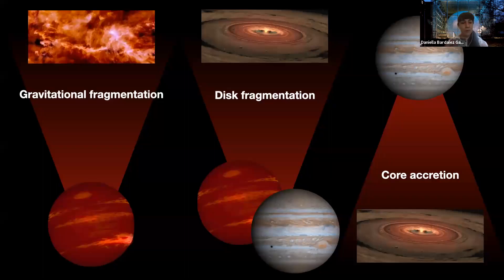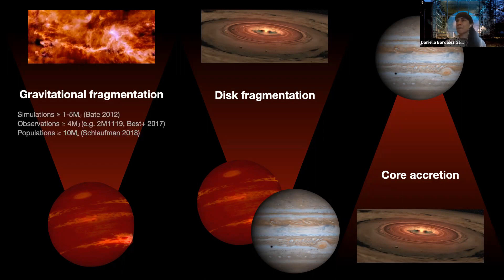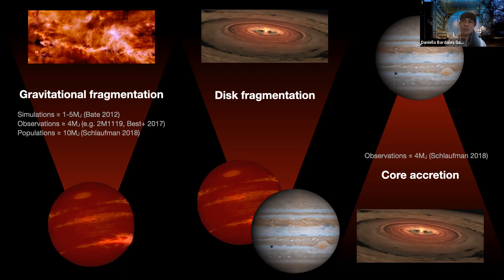This could be an interesting middle ground between the two formation mechanisms. There are simulations that support a rough range for gravitational fragmentation — the minimum mass for fragmentation would be anywhere between one to five Jupiter masses.